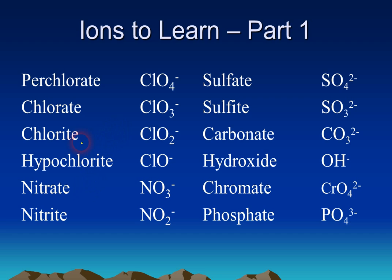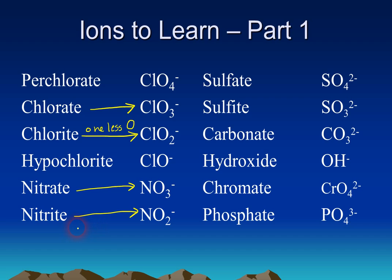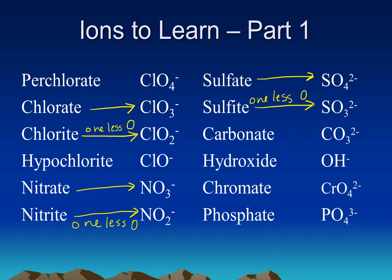There are some patterns you might want to be aware of. Notice that chlorate and chlorite are identical except chlorite has one less oxygen atom than chlorate. The same is true for nitrate and nitrite — nitrite has one less oxygen atom. Same thing for sulfate and sulfite — sulfite has one less oxygen. So if you know the formula for the -ate version of the ion, you can figure out the -ite version because it just has one less oxygen.